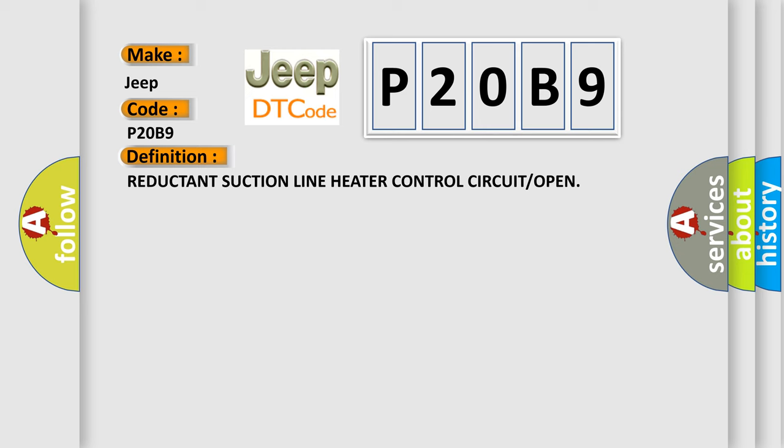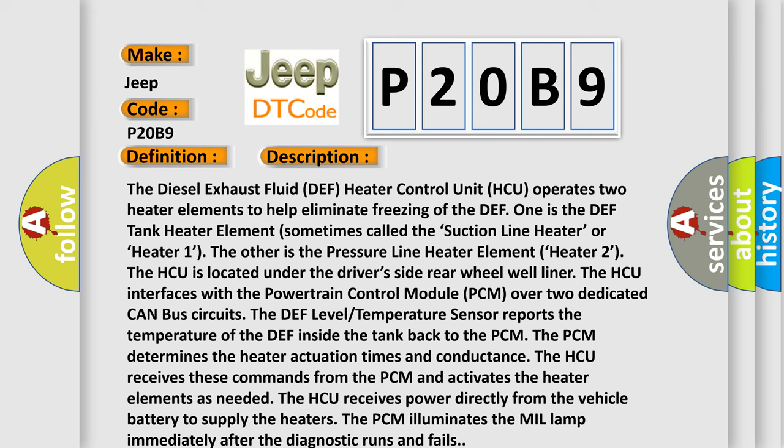Here is a short description of this DTC code. The diesel exhaust fluid (DEF) heater control unit (HCU) operates two heater elements to help eliminate freezing of the DEF. One is the DEF tank heater element, sometimes called the suction line heater, or heater one. The other is the pressure line heater element, heater two. The HCU is located under the driver's side rear wheel well liner. The HCU interfaces with the powertrain control module (PCM) over two dedicated CAN bus circuits. The DEF level temperature sensor reports the temperature of the DEF inside the tank back to the PCM.